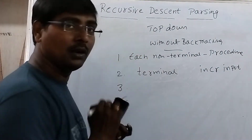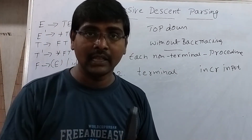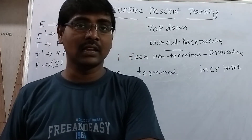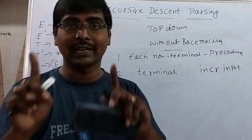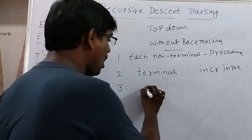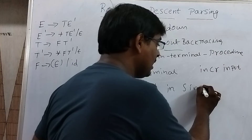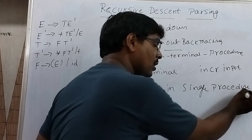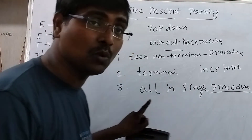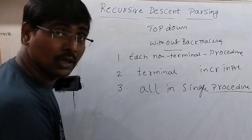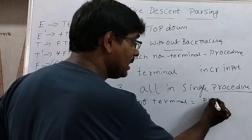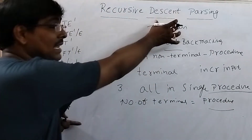A non-terminal can contain more than one production. For example, A → AB | BS | CA — here non-terminal A contains three productions. A non-terminal can contain any number of productions, and all the productions for a non-terminal are written in a single procedure. The number of procedures equals the number of non-terminals in the grammar.